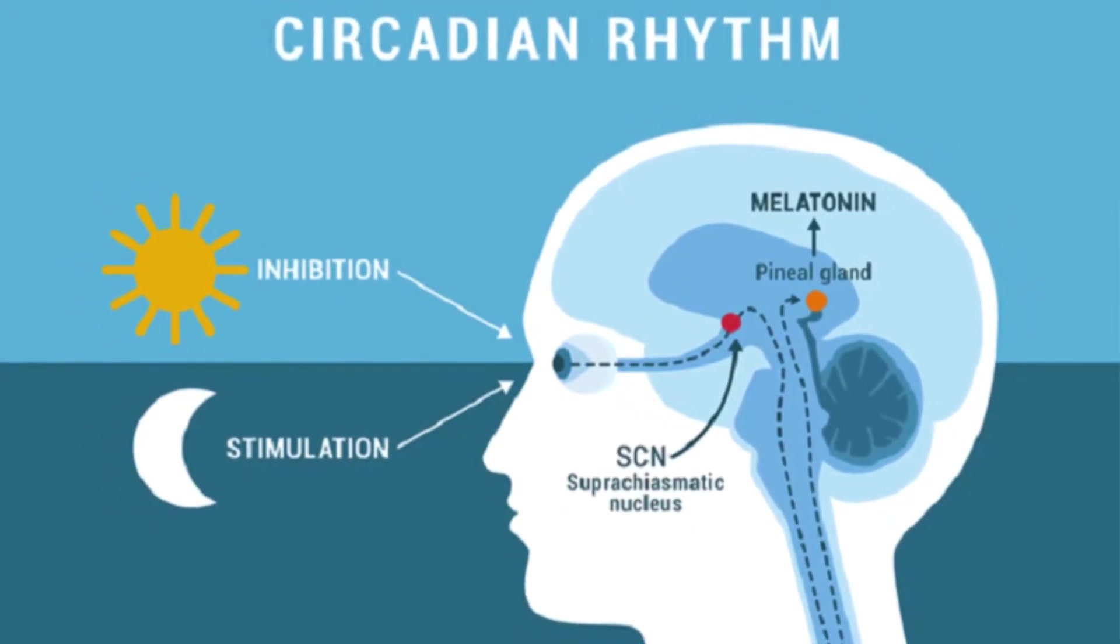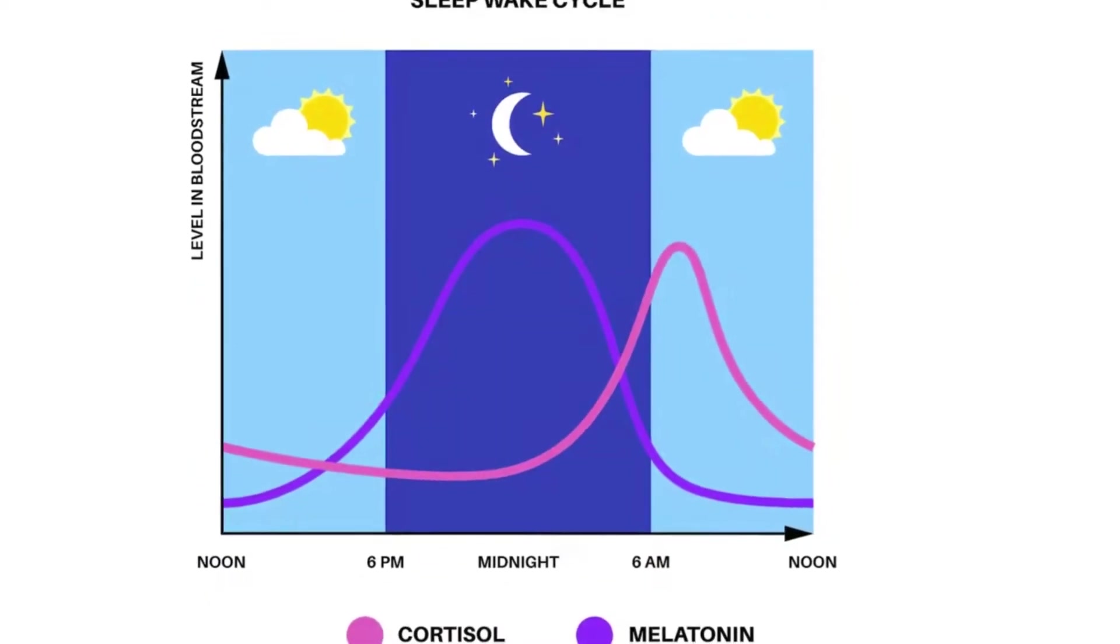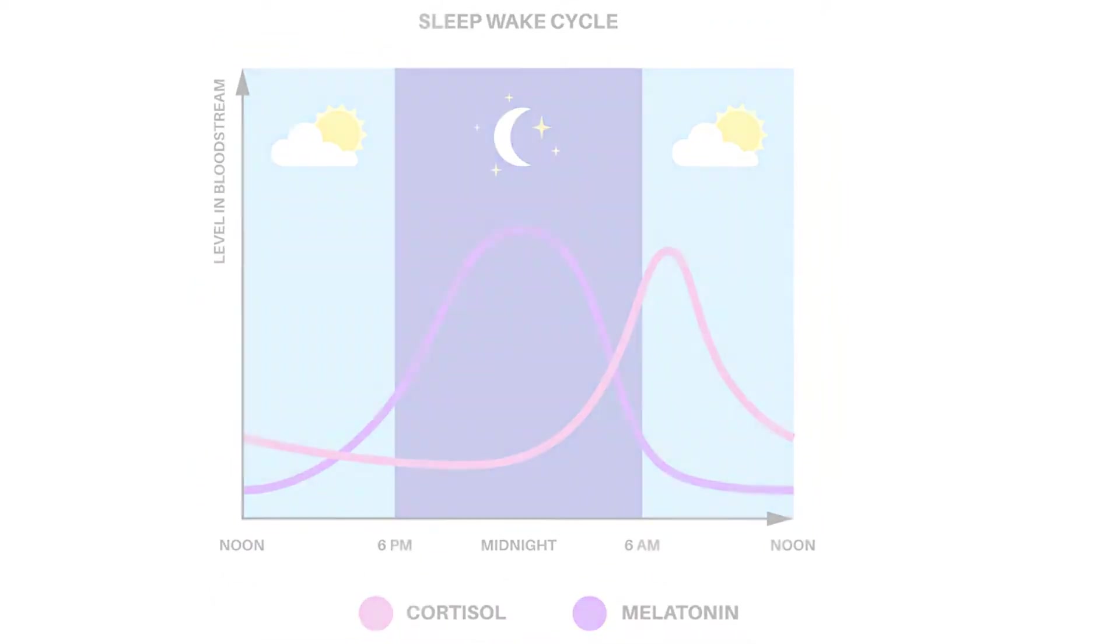Our bodies rely on a natural rhythm called the circadian rhythm, which is regulated by light exposure. Morning blue light suppresses melatonin, making us alert. But by evening, our bodies expect dimming light to trigger melatonin production and prepare for sleep.